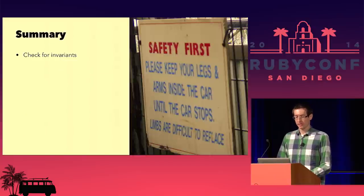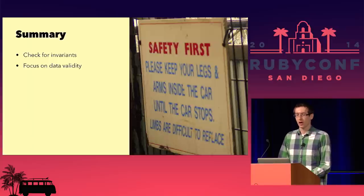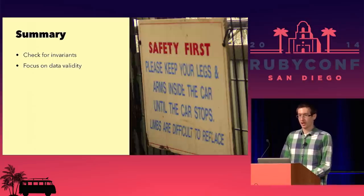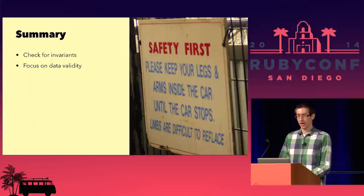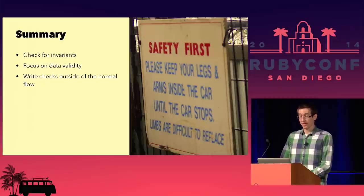So to summarize: you want to check for invariants — think about your systems, find the things that never change, and write checks for those. Above all else, focus on data validity. Code is easier to fix and redeploy; data is extremely hard — it could mean restoring from backups, manually repairing records in a database, or reaching out to all your customers telling them the data you gave them is wrong. And write your checks outside the normal flow — keep them extremely simple, not susceptible to the same bugs as the main part of your code. In some cases this means writing something twice with two different algorithms, or writing something a different way but much more simply.